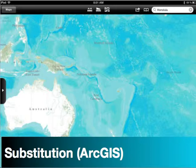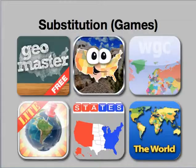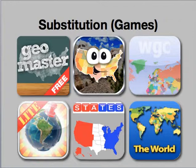ArcGIS is an Atlas app in which data is constantly updated. For example, when South Sudan became an independent country in Africa, the app had the new information immediately, whereas a print atlas could take up to a year to update. Other substitution examples could be games — instead of completing quizzes on paper, students can take online quizzes in game format, which can point to substitution or augmentation depending on the features. Some games record scores, provide immediate feedback, and online references, all enhancements of non-tech activities.